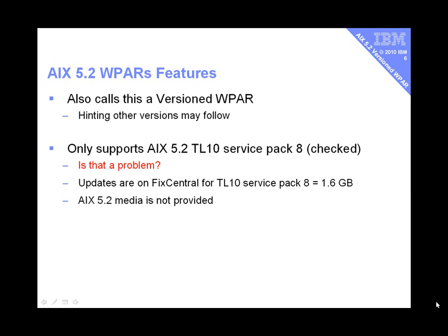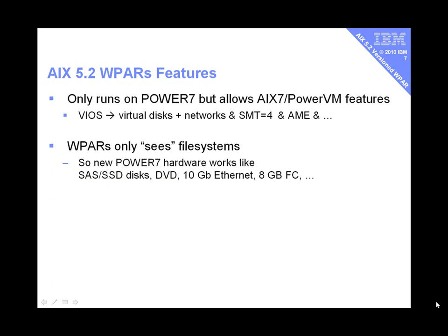Note that the AIX 5.2 install media is not going to be provided as part of this product. We are not going to encourage people to do a fresh install of AIX 5.2 at this stage. This is a product for people already running AIX 5.2 who want to move up to the latest hardware. Now, as you run AIX 5.2 in a WPAR, some new features available underneath the WPAR also become accessible — for example, the Virtual I/O Server becomes available, so you could be running this WPAR on virtual disks over virtual networks. SMT 4 with Power 7 gives a speed boost, and as far as AIX 5.2 is concerned, you just seem to have a lot of CPUs.